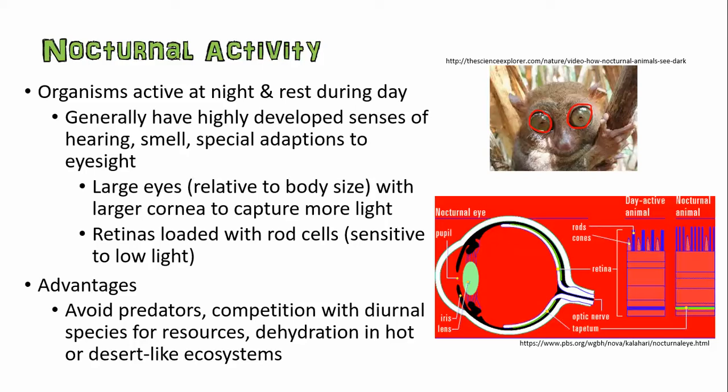This little fellow here has ginormous eyeballs — an indication that they are probably a nocturnal organism, because their eyes are as big as possible to let in as much light as possible. Their cornea is also bigger to capture more light. Nocturnal animals also have a lot more rod cells. Rod cells are sensitive to low light, so they can operate fairly well in low light conditions. They're just not sensitive to color, which is why nocturnal organisms may not have sensitive color vision — in the night, things don't really tend to show off a lot of color.